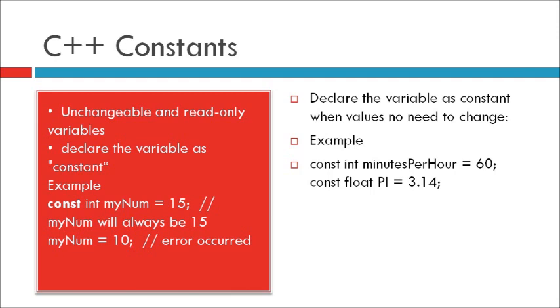You should always declare the variable as constant when you have values that are unlikely to change. For example, const integer minutesPerHour equals 60. That will never ever change.